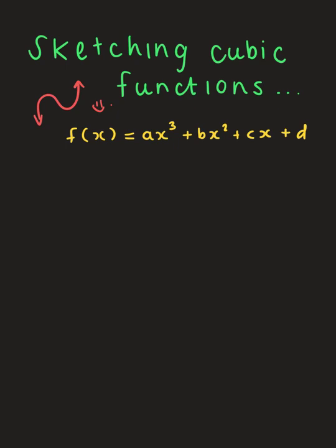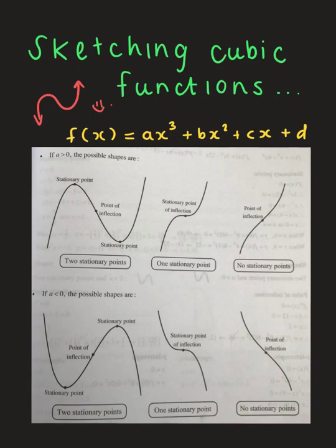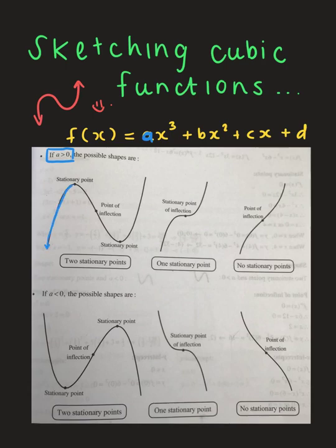When 'a' is positive — 'a' being the coefficient of your x³ term — we'll look at when there are two stationary points, one stationary point, and no stationary points. With two stationary points, the graph starts off by increasing, gets to its local maximum, then decreases past the point of inflection where concavity changes, reaches the local minimum, and after that increases again.